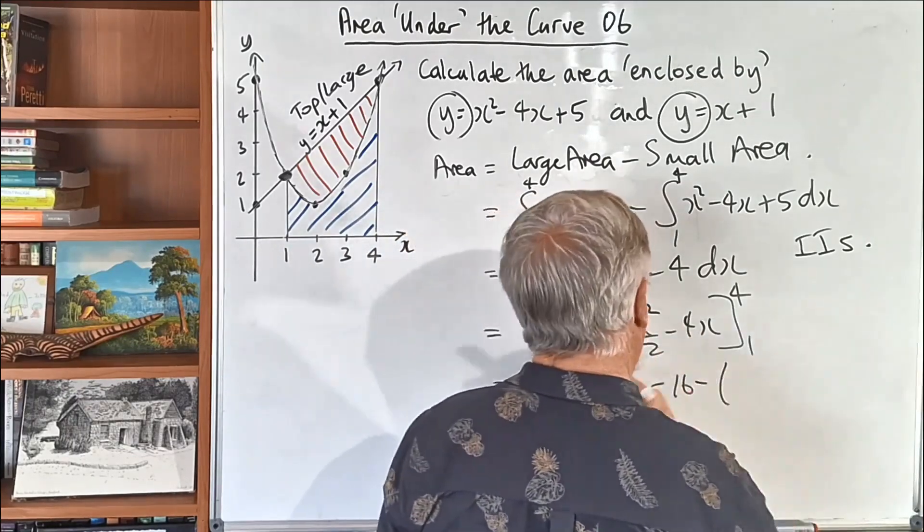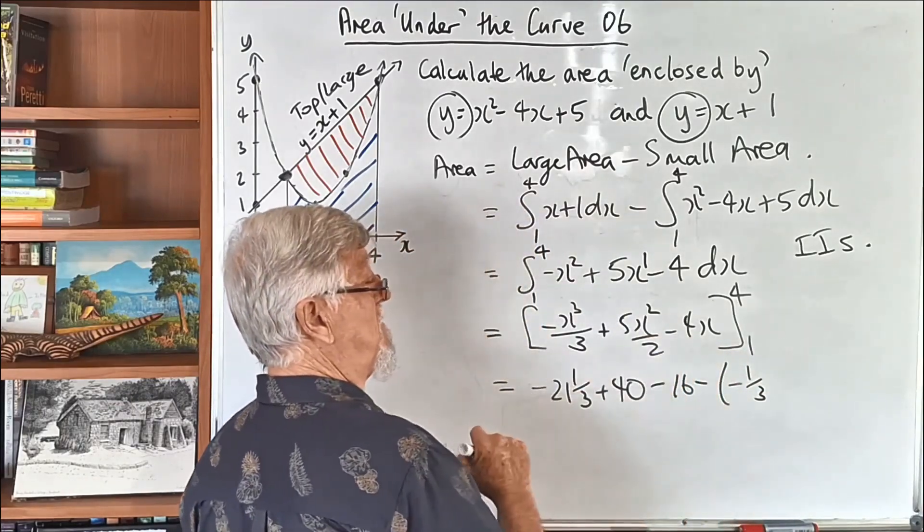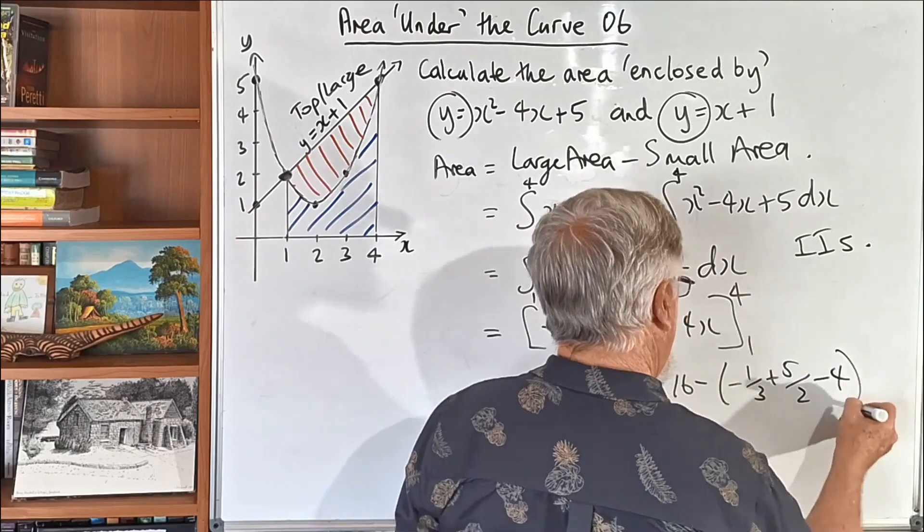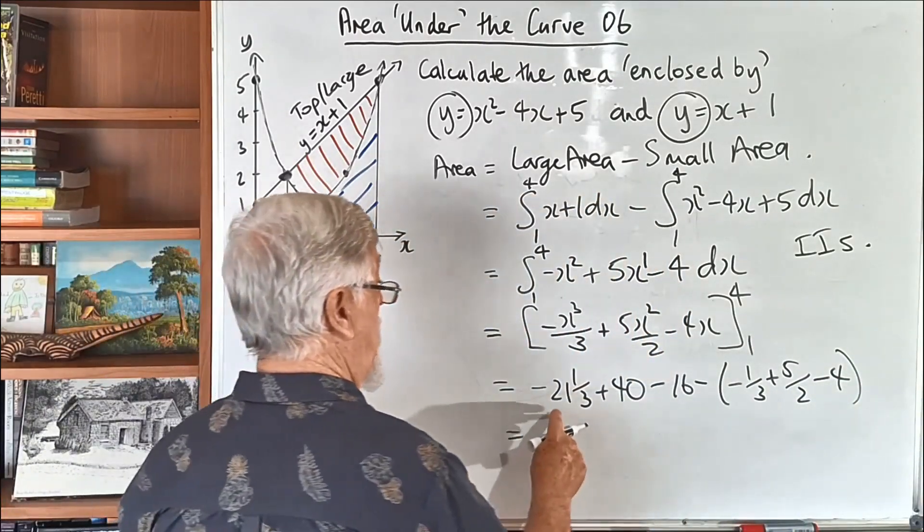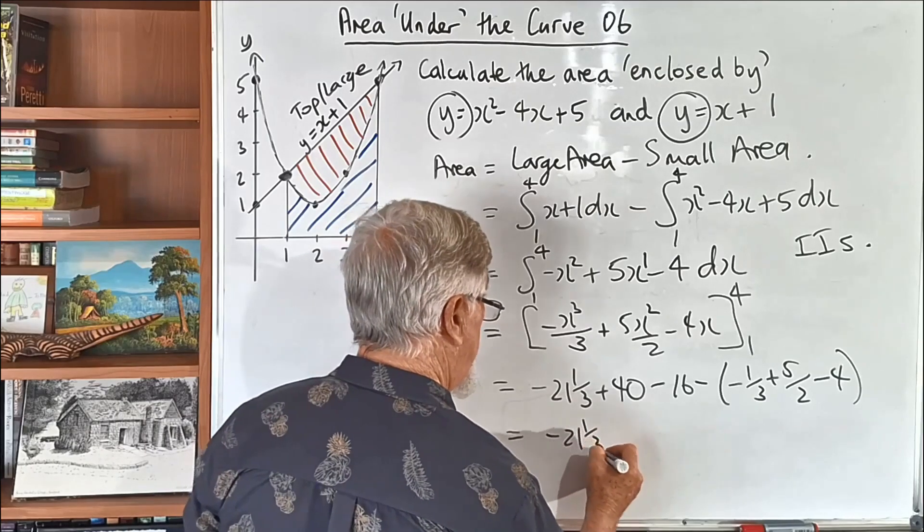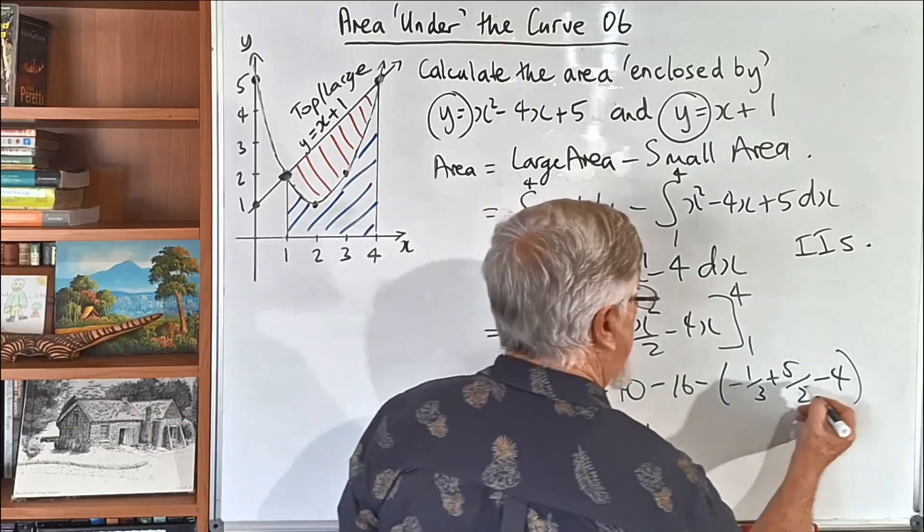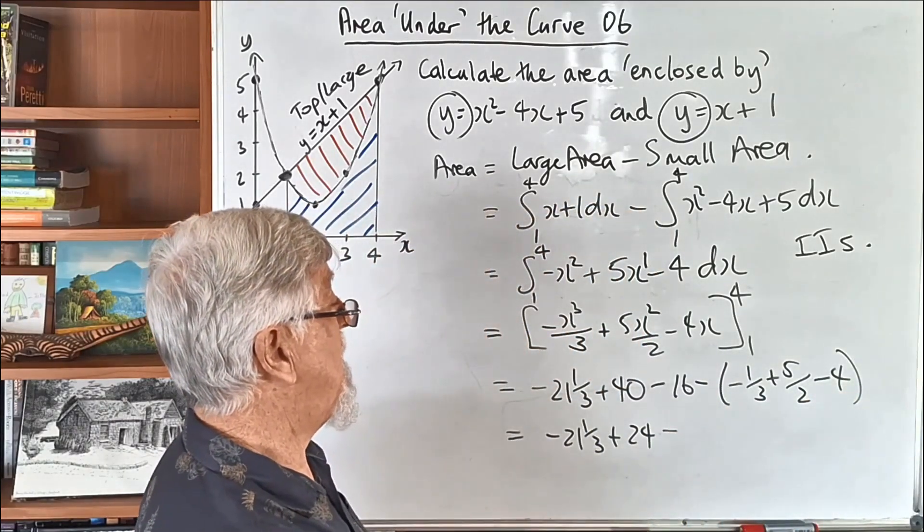Now, the bracket's coming in, subtract all of this one, and it's going to be minus 1 third. That's a 1, so it's 5 on 2, and that's minus 4. Calculation's a bit yucky, but hopefully they work out really nice. So we've got minus 21 and a third, plus 40 take 16, 24. I'm going to calculate all of this first, so that'll be minus, and we've got a pretty yucky calculation there.